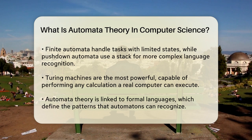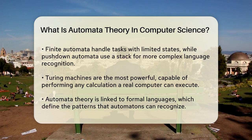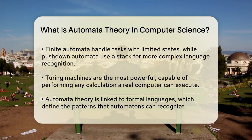Pushdown automata are more advanced and use a stack to recognize a broader class of languages. Then there are Turing machines, which are the most powerful and can perform any calculation that a real computer can do. They use an infinite tape and a read-write head to process information.